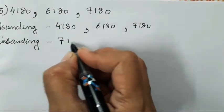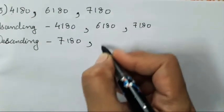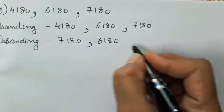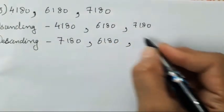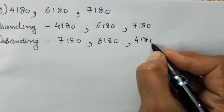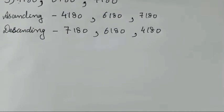For descending, first write this, then write this. Middle term always remains the same for both ascending and descending. 4180. Isn't it easy to solve children? Don't get confused. It is very very easy.